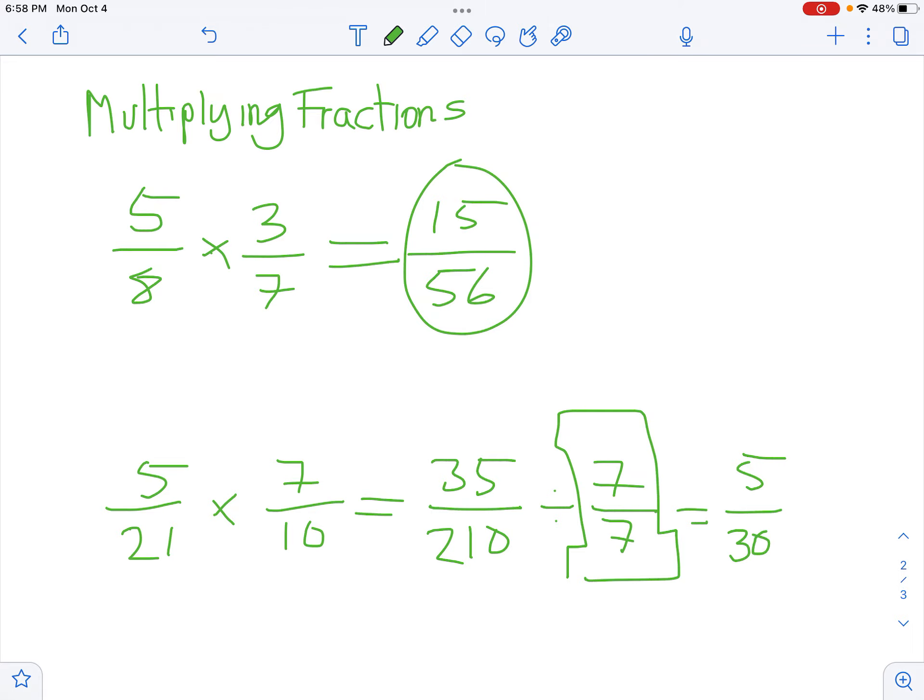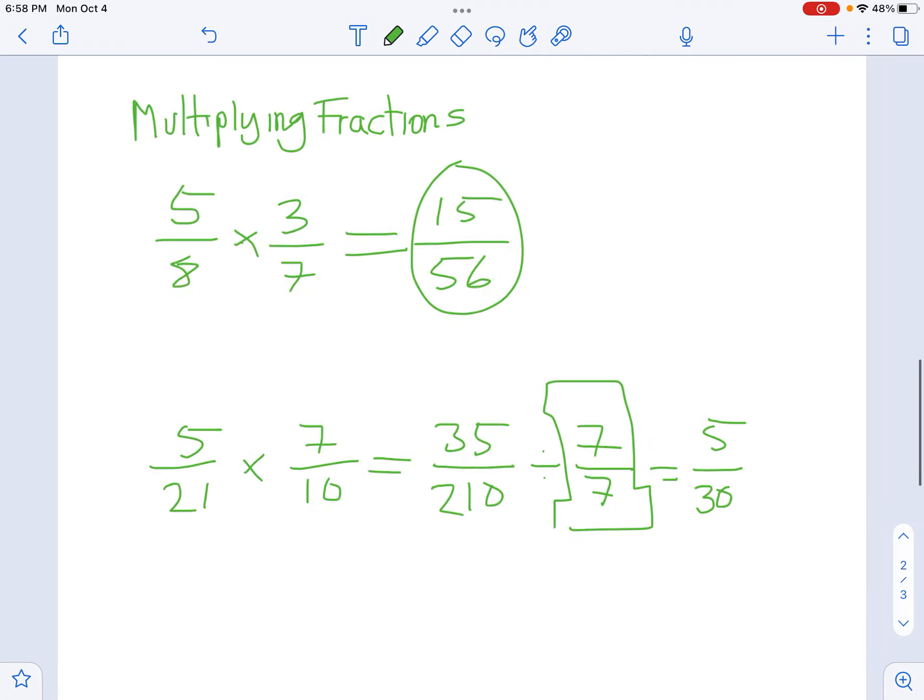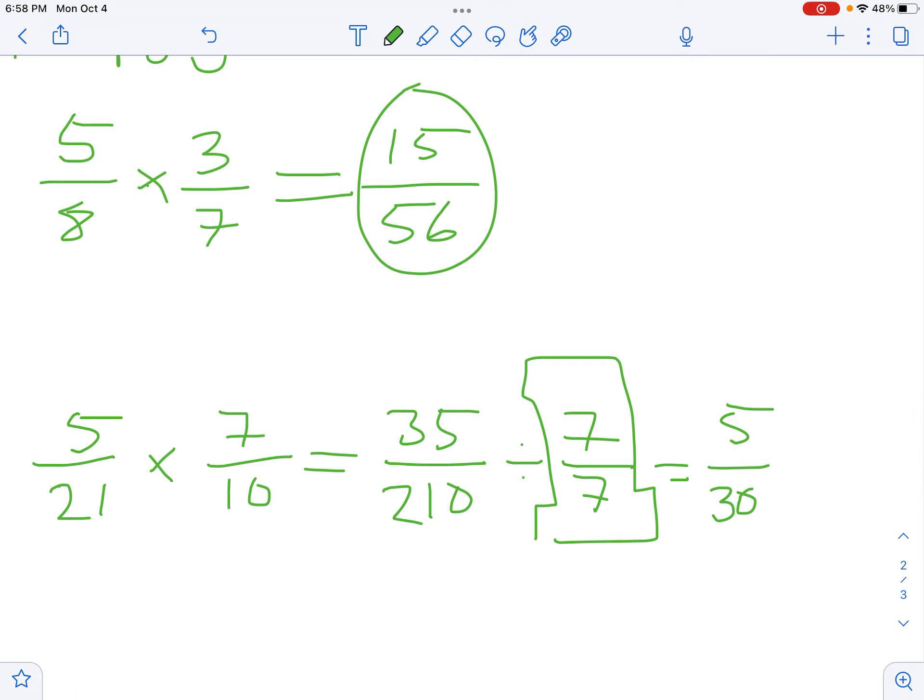I can keep going with 5/30. I'm going to divide both the top and bottom by 5/5. There's my form of 1. So I'm reducing like we did before.